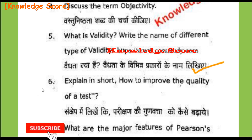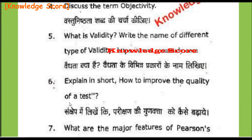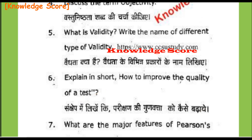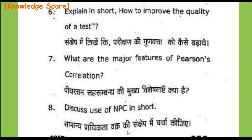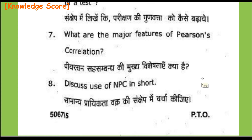Question 6, Section B: Explain in short how to improve the quality of a test — Sanchep mein likhiye ki parikshan ke gunavatta ko kaise badhayein. Question 7: What are the major features of Pearson correlation — Pearson sambandh ganank ki vishishtayen kya hai? Question 8: Discuss the use of NPC in short — Samanya praiktata vakra ki sanchep mein charcha kijiye. This completes Section B of the paper.